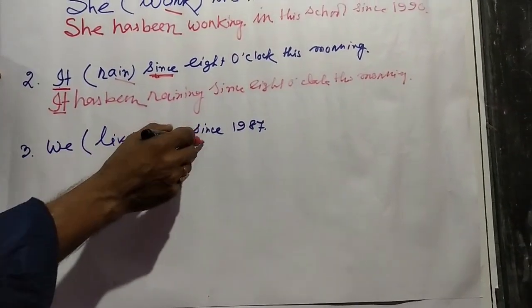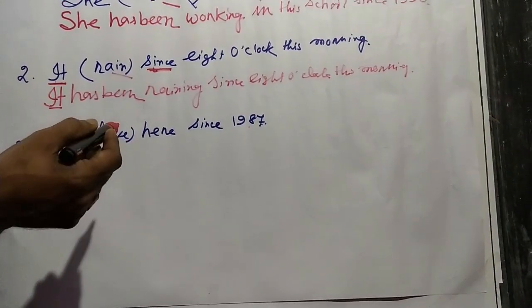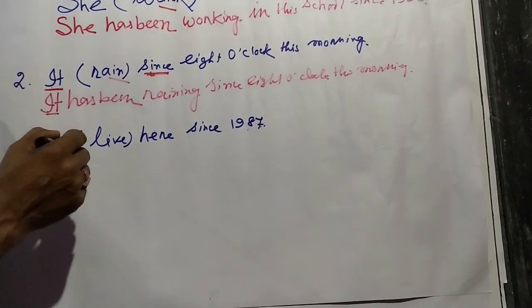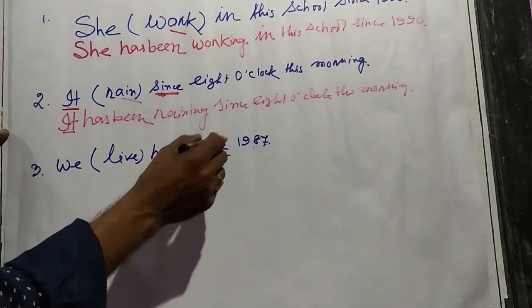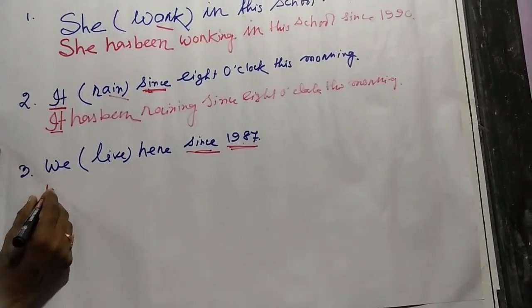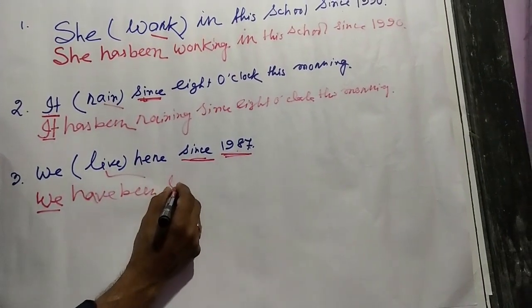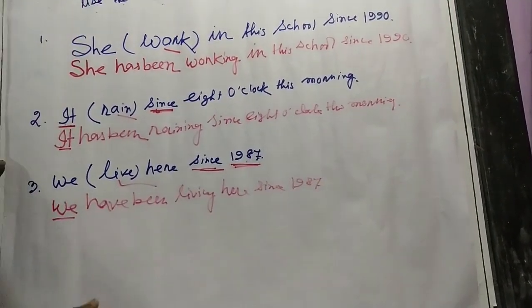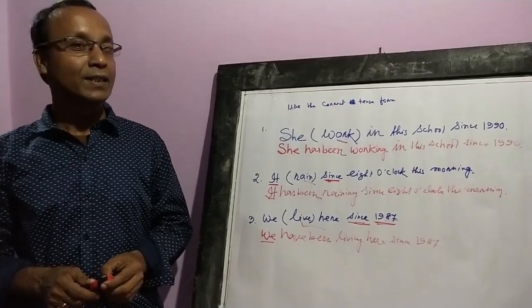Next: 'We live here since 1987.' The action started in 1987 and is still continuing, so it is present perfect continuous. 'We' is first person plural, so we use 'have been' and add '-ing': 'We have been living here since 1987.' Dear viewers, please like, share, and subscribe to my channel. The link for other present perfect continuous videos is in the description box.